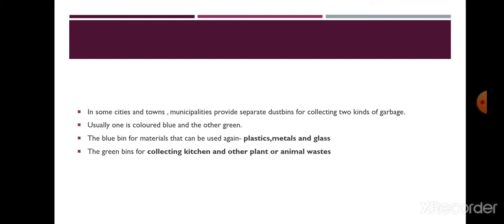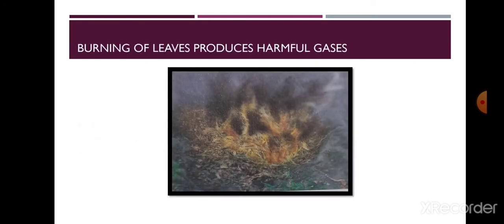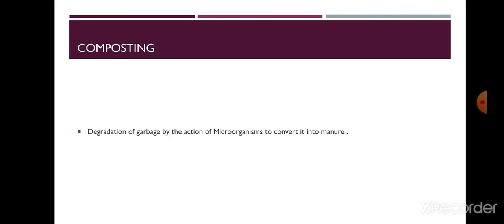In some cities, municipalities keep two kinds of dustbins — blue for materials like plastics, metals, and glass, and green for kitchen and other plant waste. However, there is another problem: farmers with large land holdings, after crop harvesting, make a heap of the remaining plant material and set it on fire. This generates a lot of smoke and fog, and the air becomes very polluted, resulting in air pollution. Instead, the waste should be properly managed.